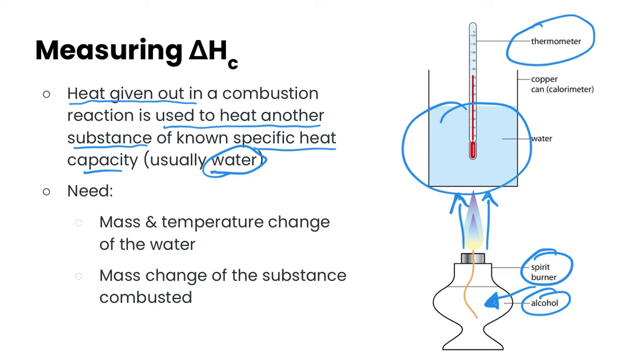So basically, there's a few different values you need to record or make sure that you have as you're doing this particular experiment. The first is the mass of the water, as well as the temperature change of the water, because both of those are going to come into our q equals mc delta t equation.